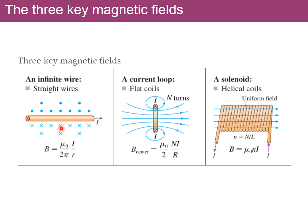If the current is going from left to right, you use your right hand, pointing your thumb in the direction of the current and curling the fingers. You'll see that the fingers curl out from the top of the screen and down into the bottom. So the field above the wire is coming out of the paper, and below it is going in, represented by dots and X's. The field depends on distance as one over R, where mu-zero is the permeability constant and I is the current. As R gets larger, B gets smaller.